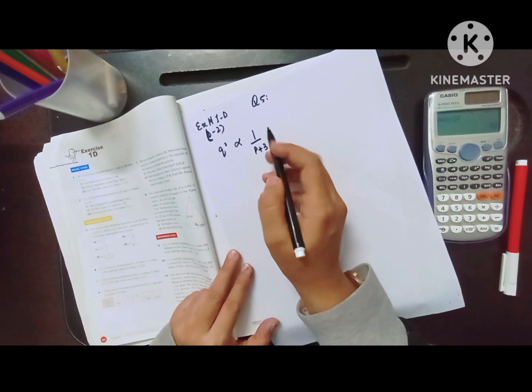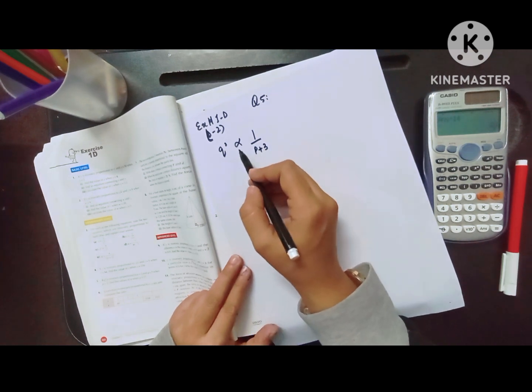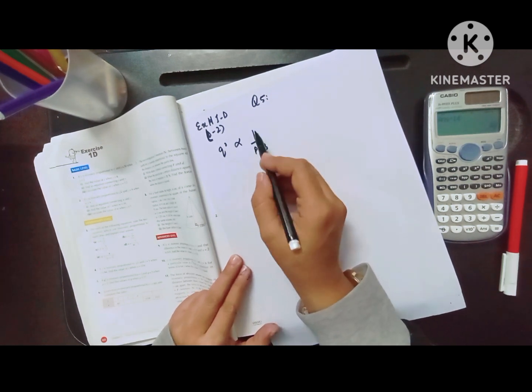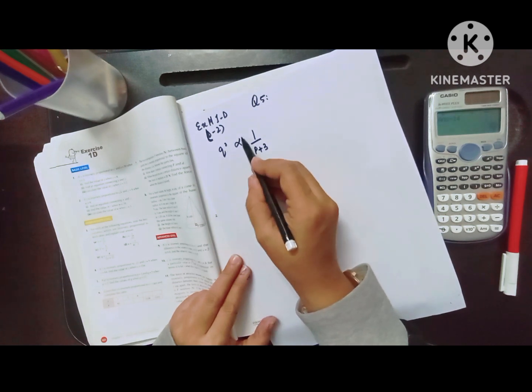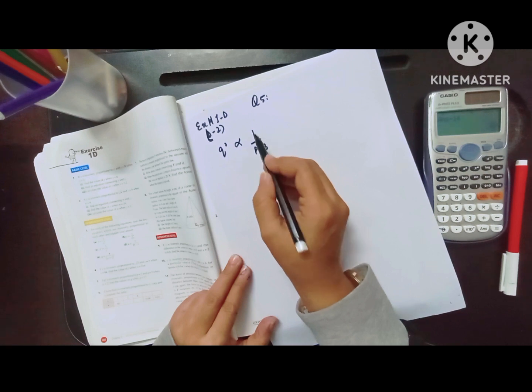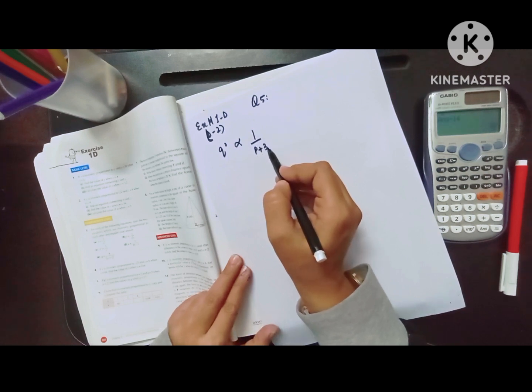When we have a condition of inversely proportional, we have to use the sign of proportionality with 1 over the value of the next variable. So q² is inversely proportional to 1 over p plus 3.